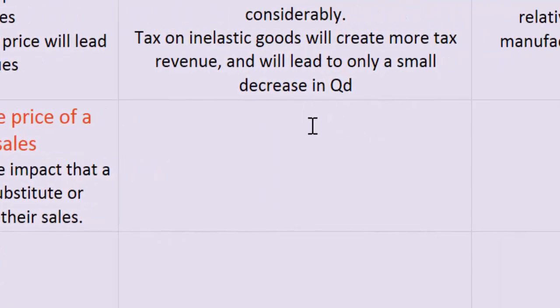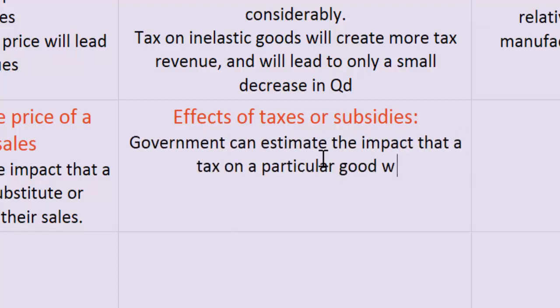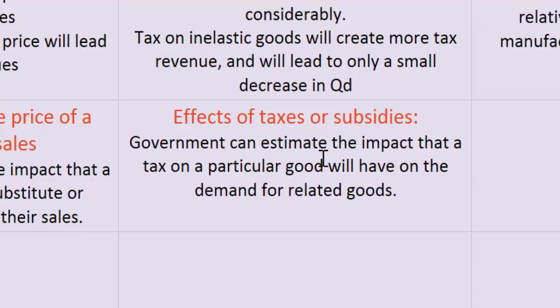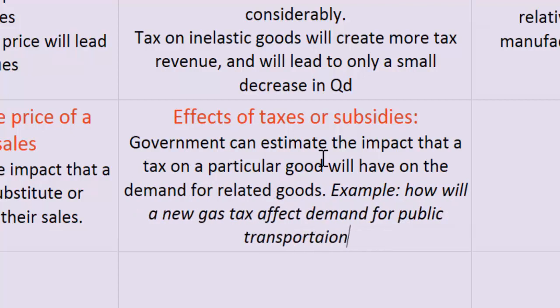A knowledge of XED can also help government make informed decisions about placing taxes or subsidies on the production of different goods. Government will be able to estimate the impact that a tax on a particular good will have on the quantities demanded of other related goods. For example, government might want to know that if it places a new higher tax on gasoline, this might cause the demand for public transportation — something that government is also responsible for providing — to increase.